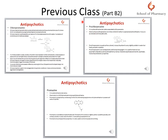In the previous class, Part B2, we discussed a number of phenothiazine antipsychotic drugs like chlorpromazine. We covered the synthesis of chlorpromazine, some of its properties, along with its uses in the management of psychotic conditions. Chlorpromazine is also used to control excitement, aggression, and agitation.